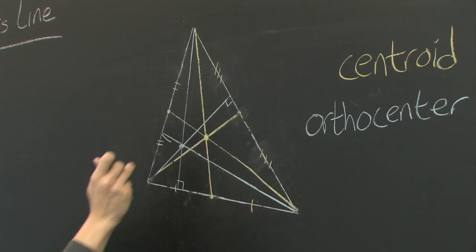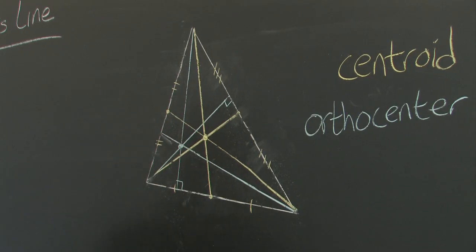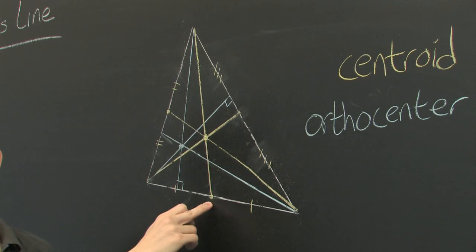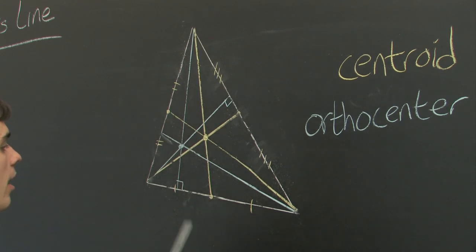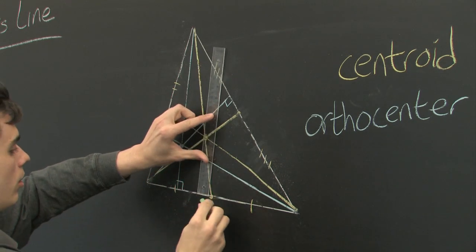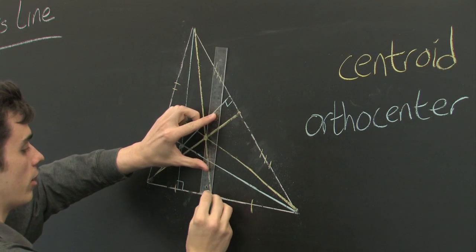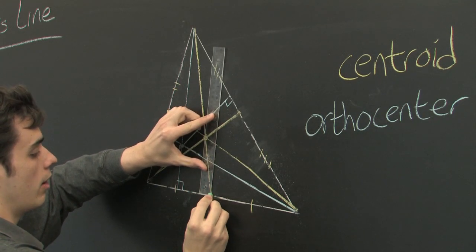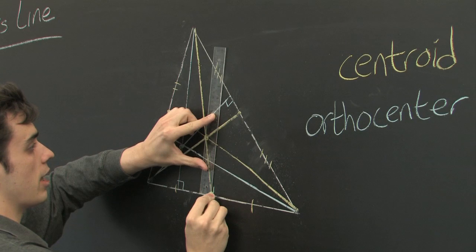Now, we'll look at a third way of constructing a center point. Again, we're going to use the midpoints of each edge. And from there, we will construct an altitude again, a line which is perpendicular to the edge.